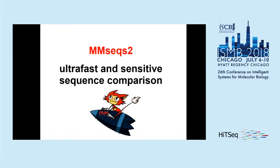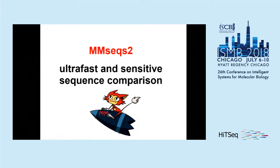Let's start with MMSeq2, which is a fast sequence search method. What you can see here is the logo — it's the little mouse. It was crafted by Unicorn in South Korea.